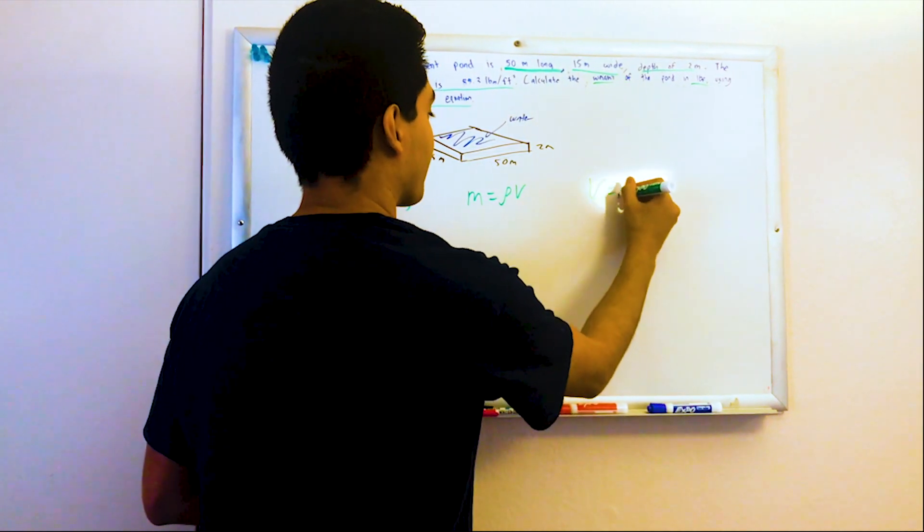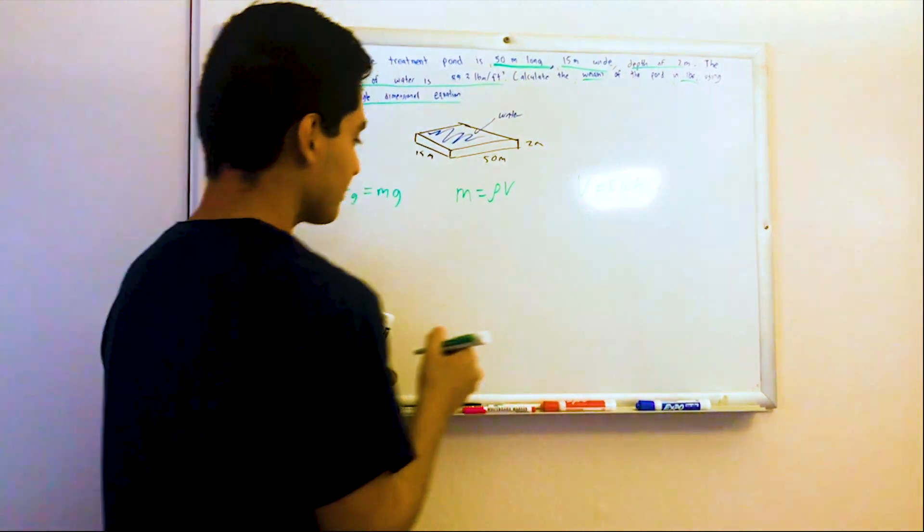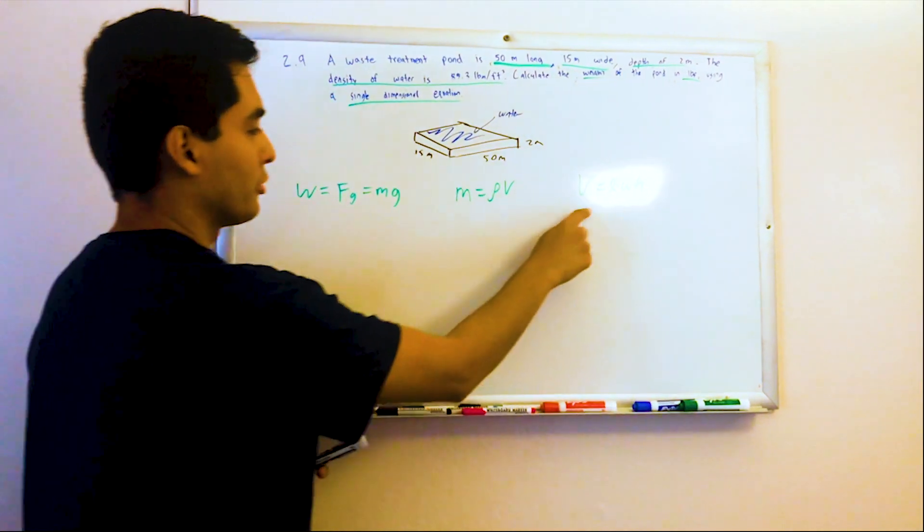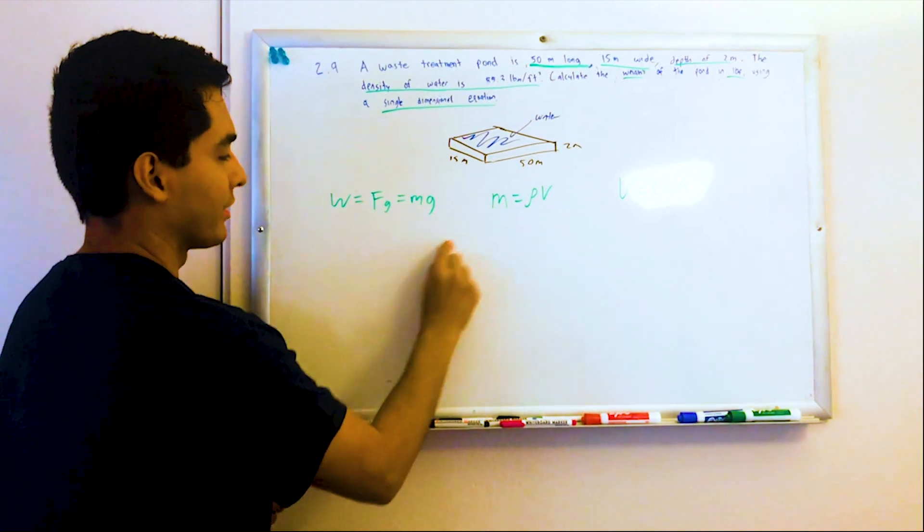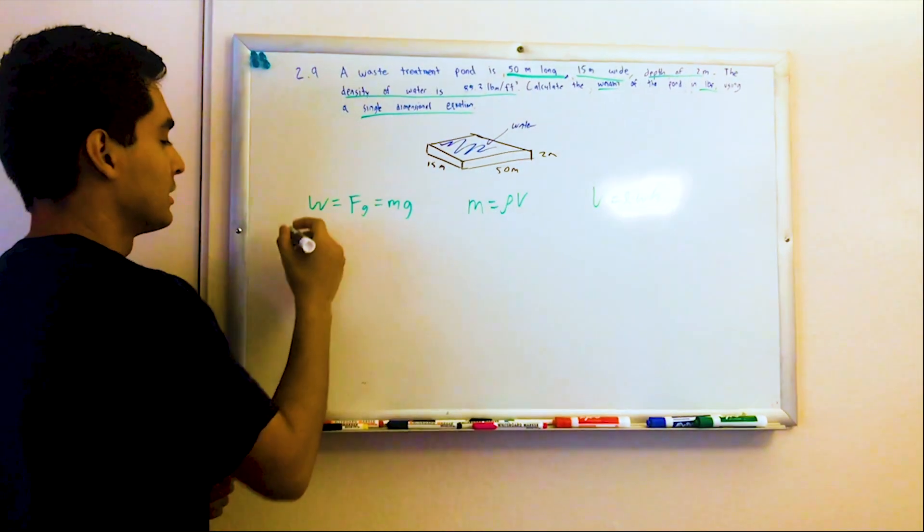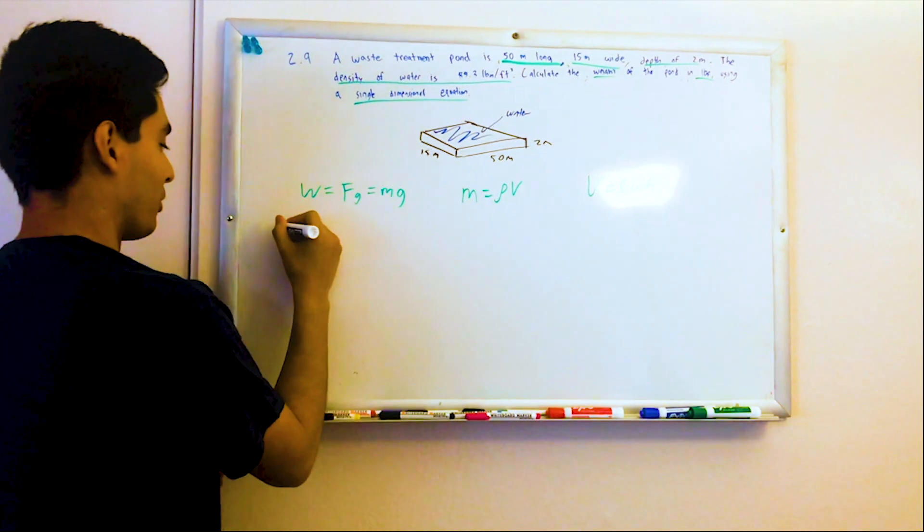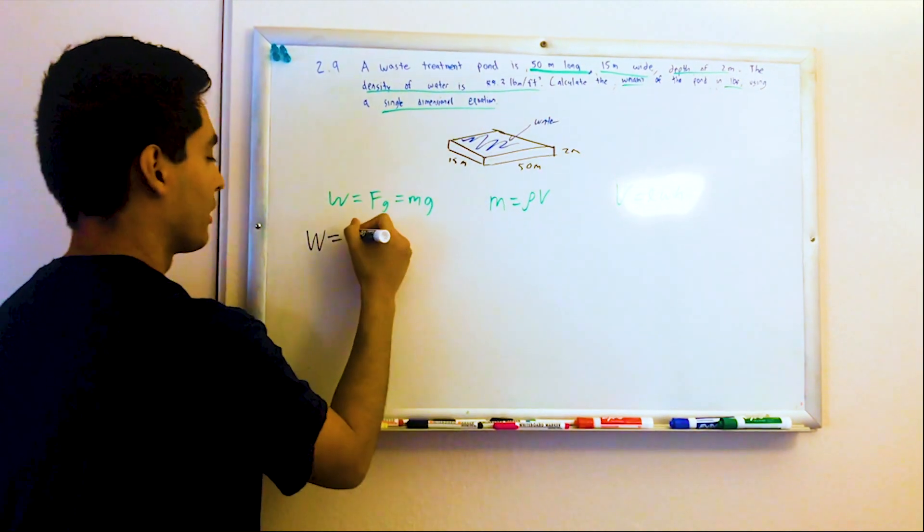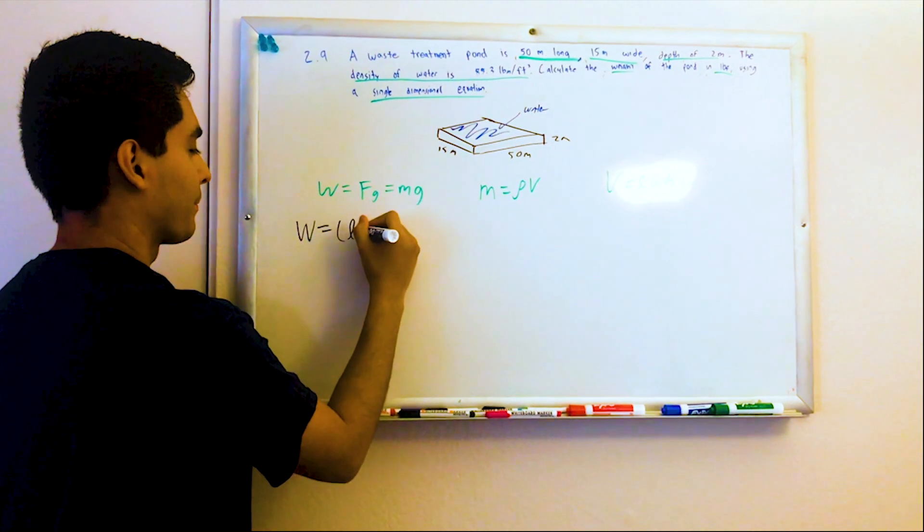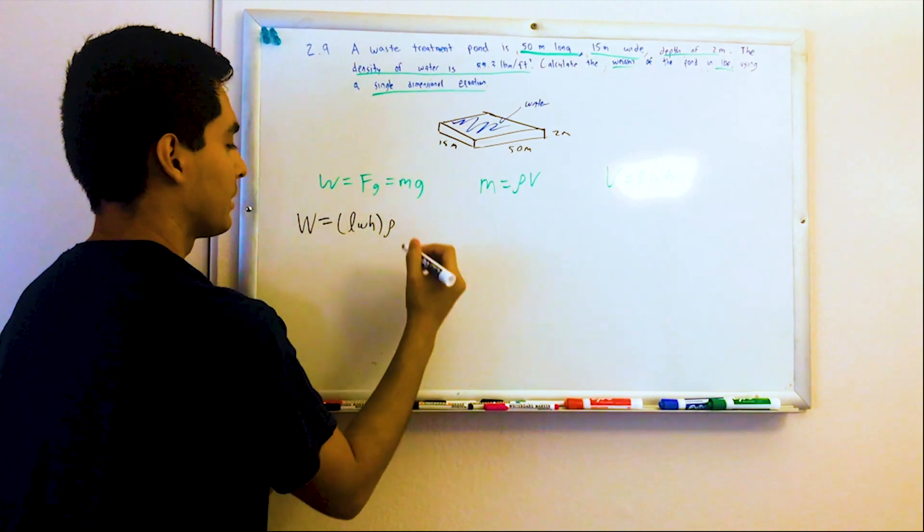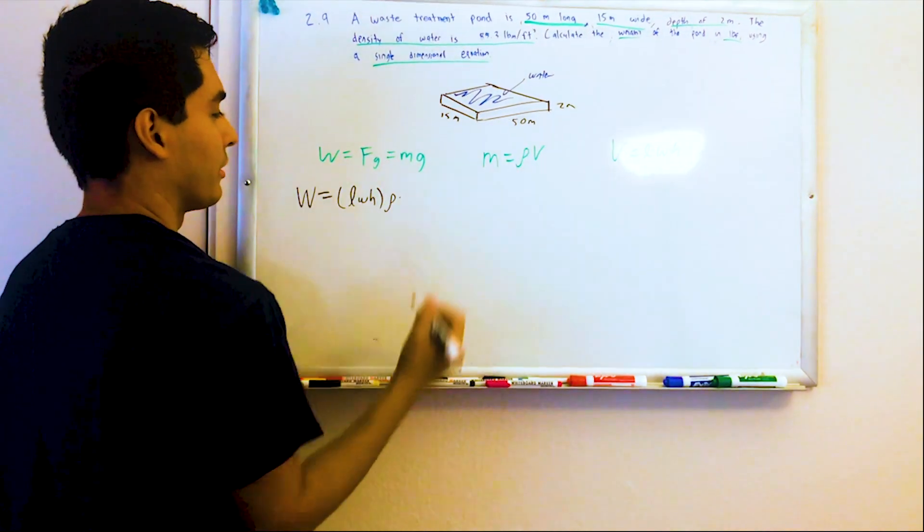So from the algebra of density equals mass over volume, then mass is density times volume. And we know volume is going to be length times width times height. All right, so we're going to plug volume into this guy, the mass into this guy, put it all together in a single dimensional equation and call it a day.